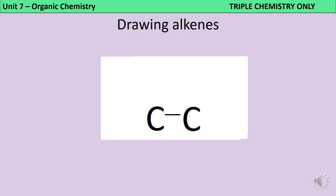If you're already confident drawing alkanes, then drawing alkenes is quite straightforward. We start off in the same way with a carbon-carbon chain, then we draw a double covalent bond between two of these carbon atoms. When drawing larger alkenes, it's important to understand that the double bond is only between two of the carbon atoms, not the whole way along the chain. Then we fill in the hydrogens — remember each carbon atom can make four bonds in total. Here both carbon atoms have already made two bonds so they can make two more, and so we need to add two hydrogen atoms.